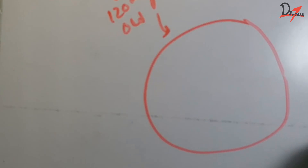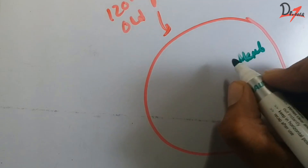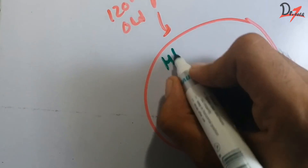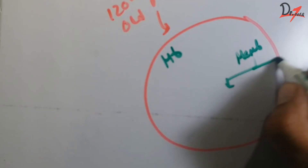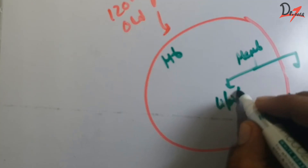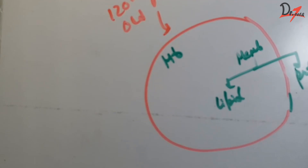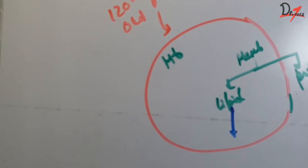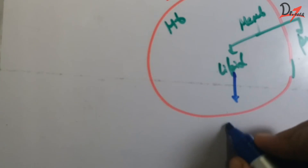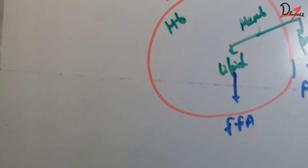In the spleen, the RBC eventually breaks up into two parts. The first part is the membranous part, and the other is hemoglobin. The membranous part further breaks up into lipids and proteins. The lipids eventually go to free fatty acids, and the protein part leads to the amino acid pool.